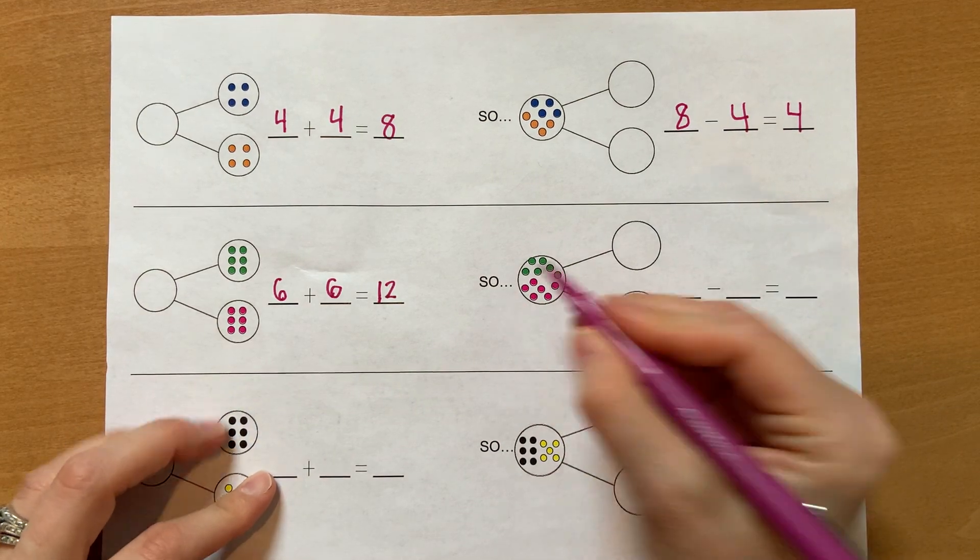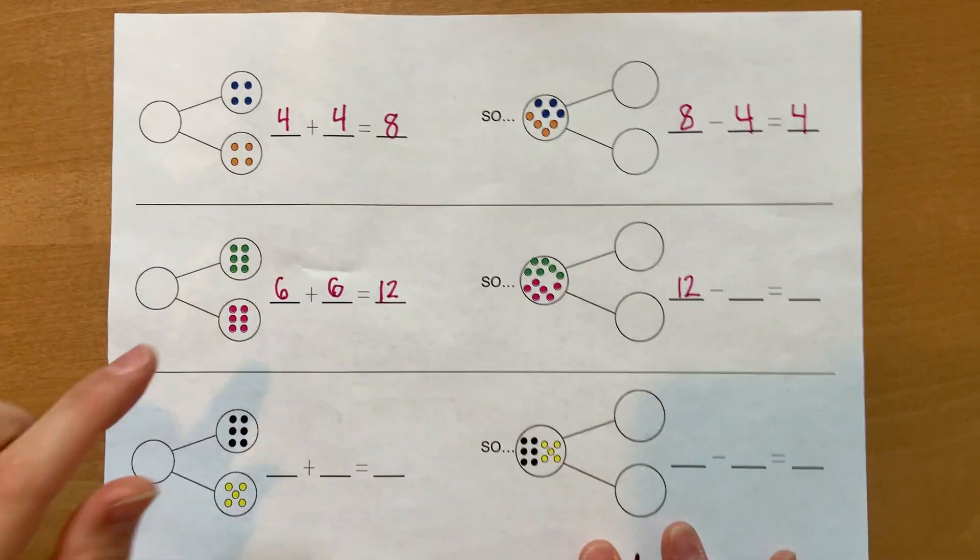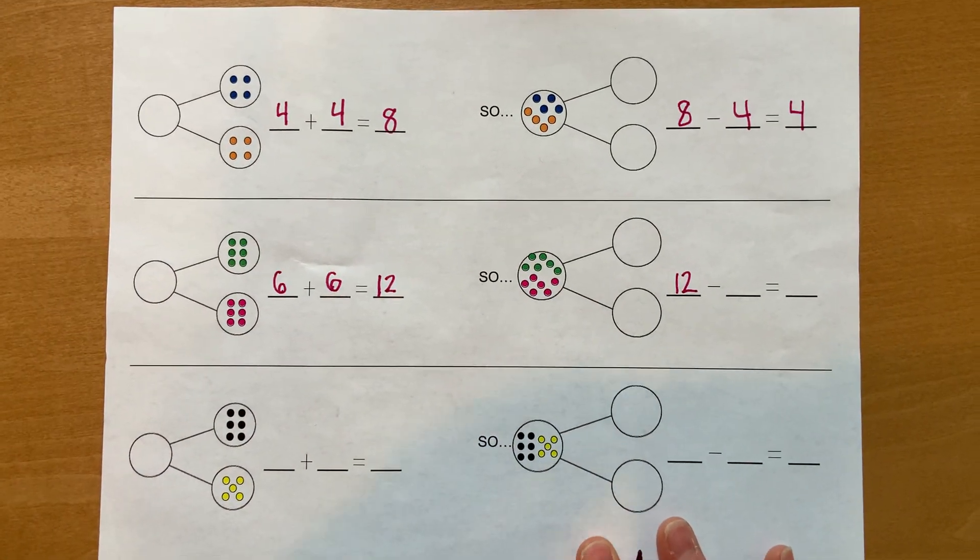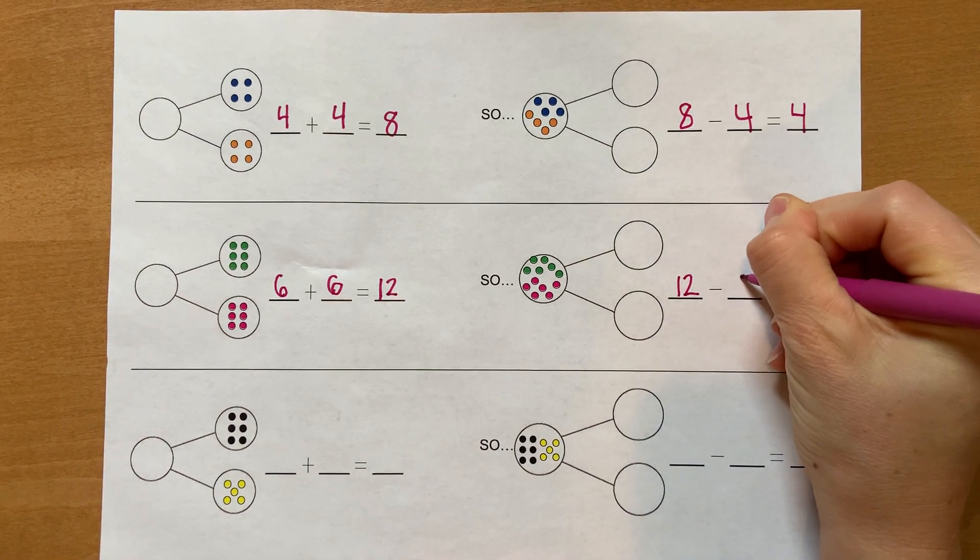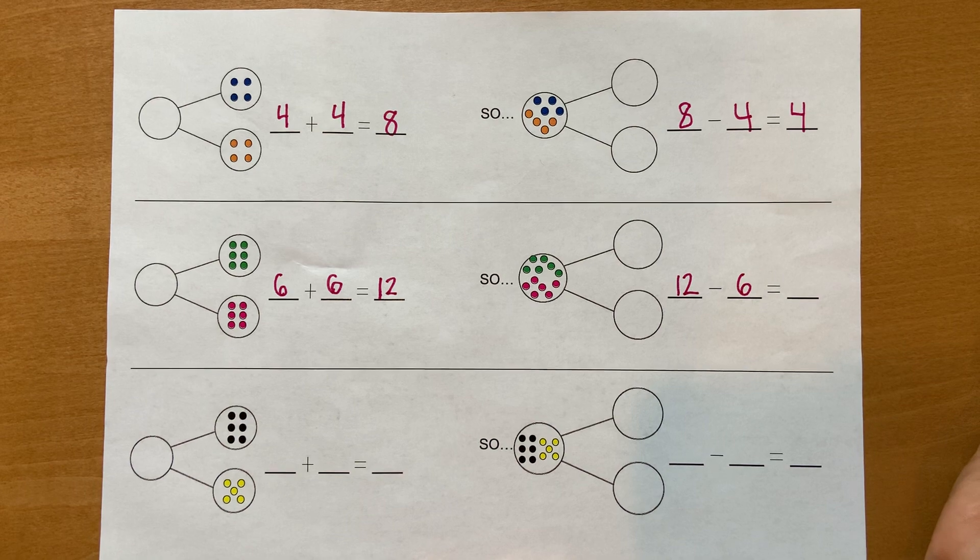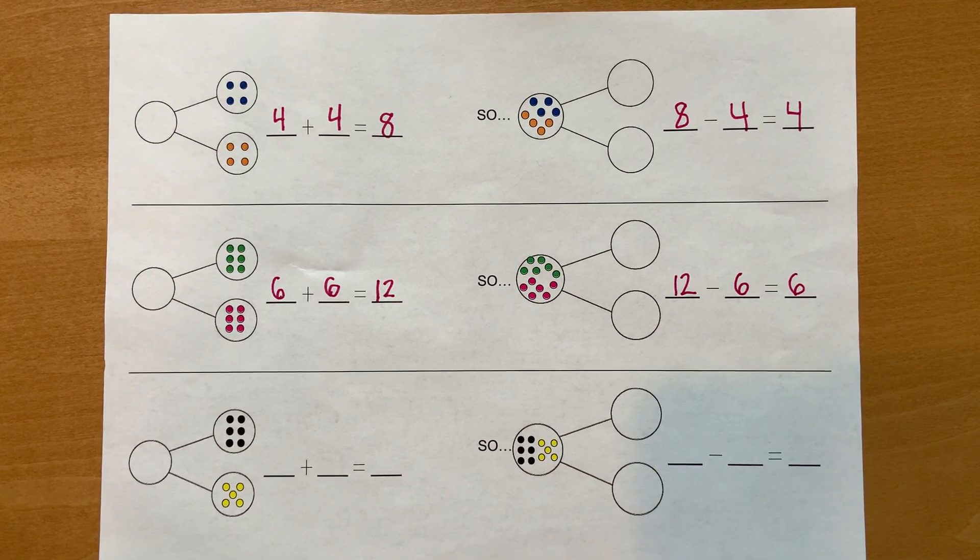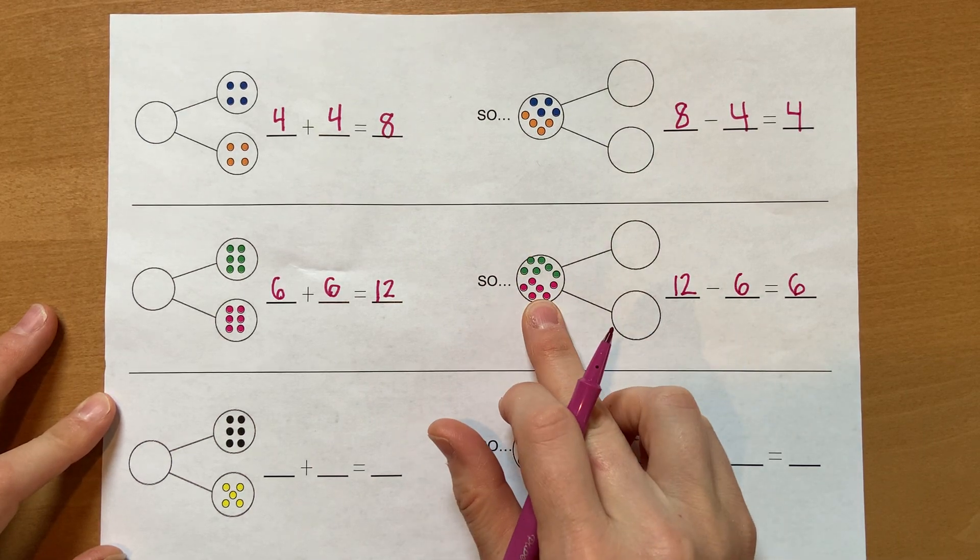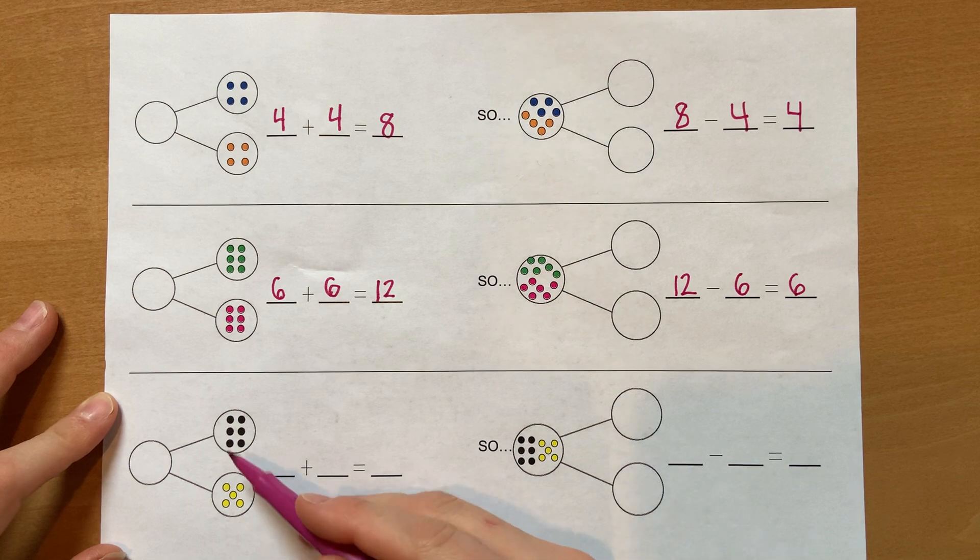So now I have all twelve together. Now I'm going to use this addition to help me with subtraction. So if I start with twelve, and I take away six, how many are left? That's right, six. That was easy, wasn't it? Because when you have the whole together, addition can help you with subtraction.